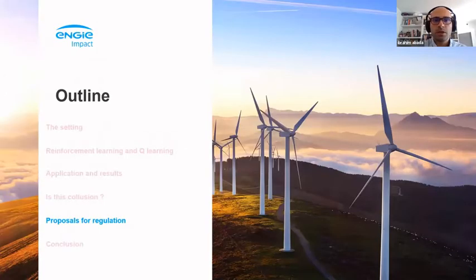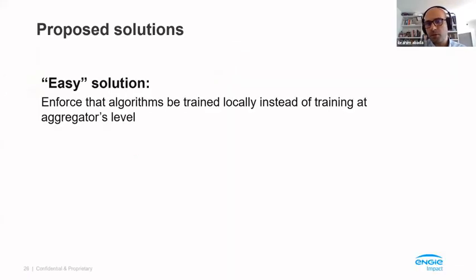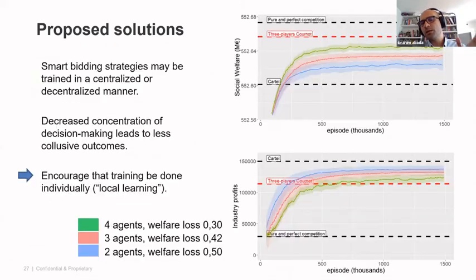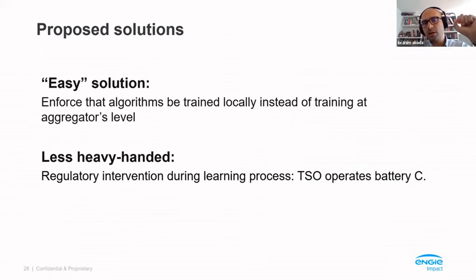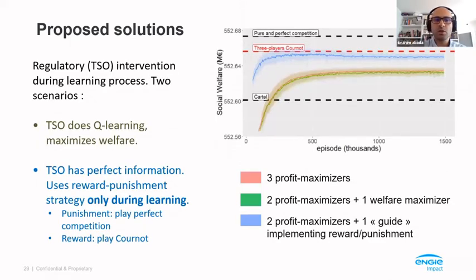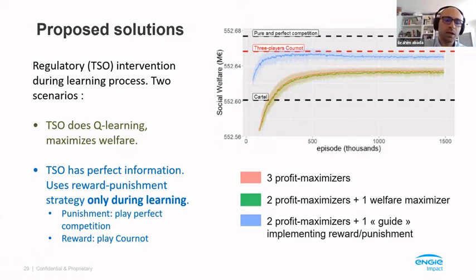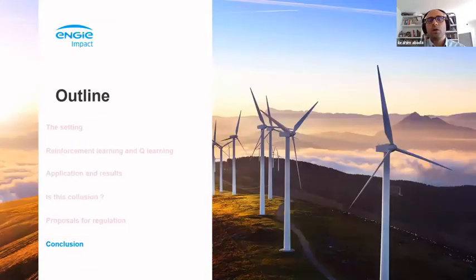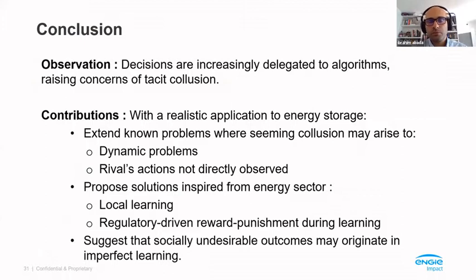I'm not going to talk about regulation in detail because I don't have time, but we have thought of some ways to regulate the market. Two approaches: first, decentralization of algorithms, which works similarly to how it works for human beings. Second, an equivalent agent — a regulator or TSO who also owns a battery but instead of maximizing welfare, just implements a simple reward-punishment strategy. Both approaches bring the system closer to the Nash-Cournot equilibrium and far away from the cartel.